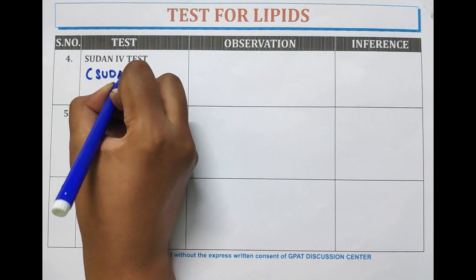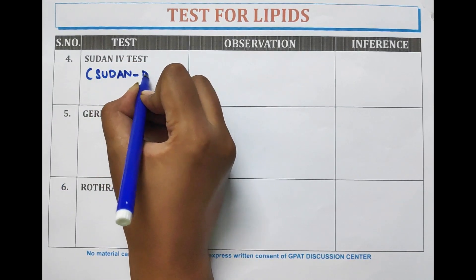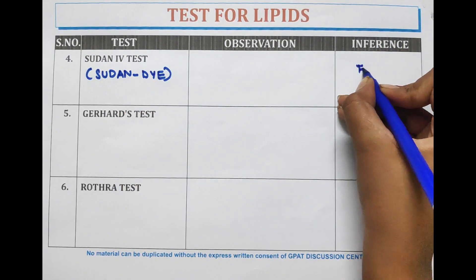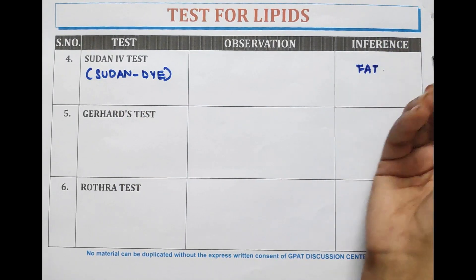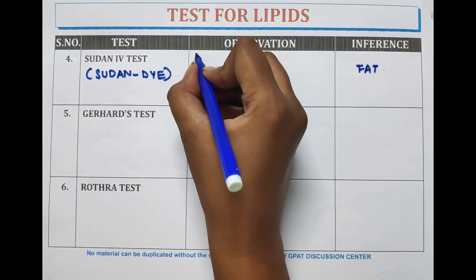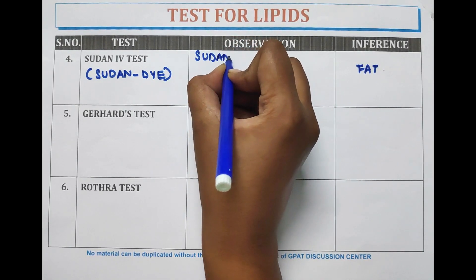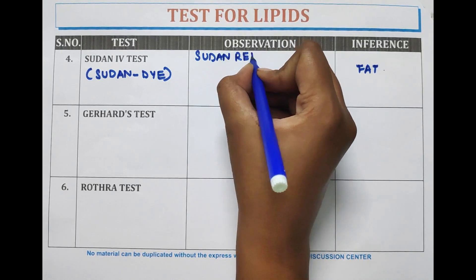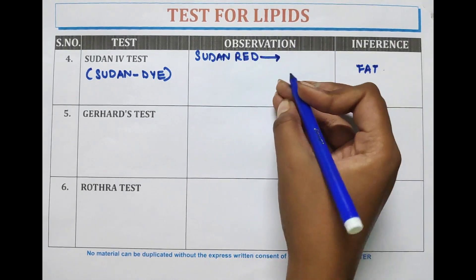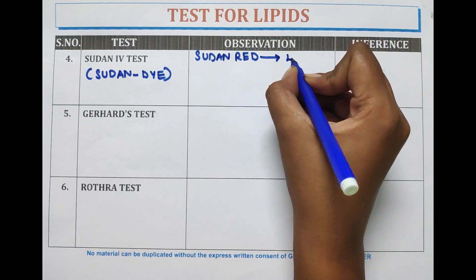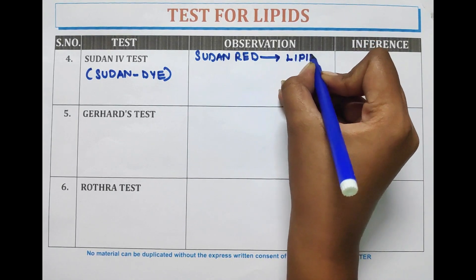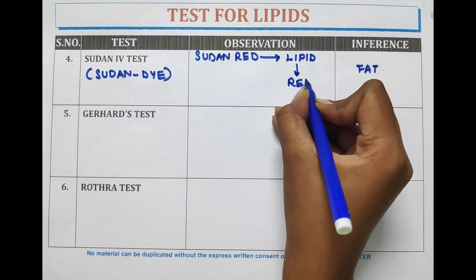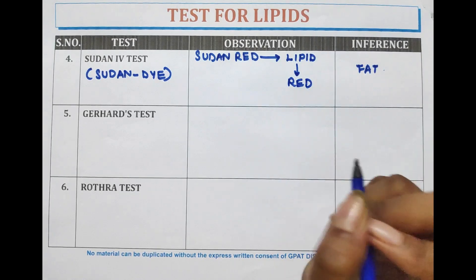The next test is the Sudan IV test. In this, Sudan dye is used. This test is for fat. Sudan red is a fat-soluble dye and it stains the lipid or fat red, so we can easily identify the fat.